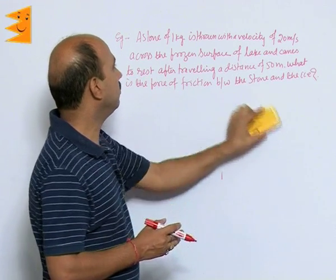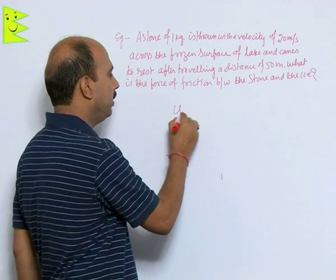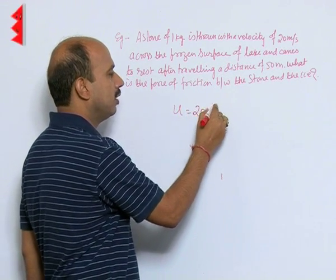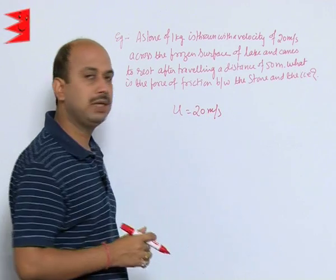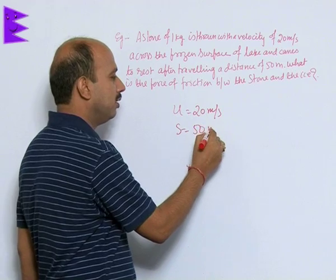If the stone is thrown with a speed of 20 meter per second, so initial speed you can take 20 meter per second, this is the initial speed. It travels a distance of 50 meter.